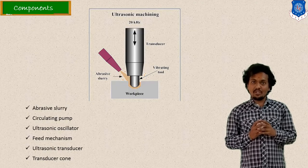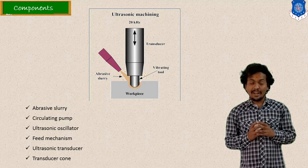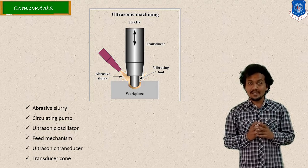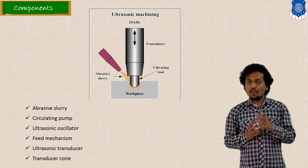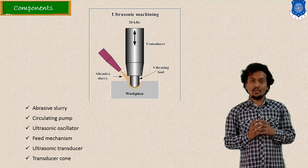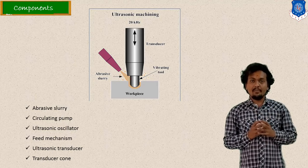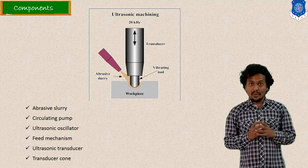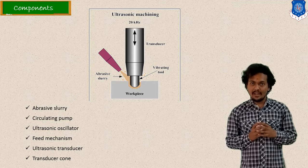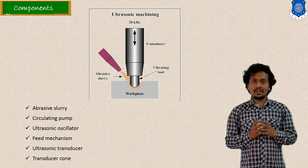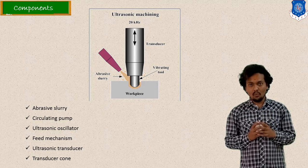So in ultrasonic machining, here I mentioned the basic setup or construction. So as per our discussion, here in ultrasonic machining, vibratory motion is important — it means a transducer is used. So due to the transducer, we can achieve this up-down or vibratory motion and due to this vibratory motion, we can remove the material. After that, abrasive slurry is also important and that is also mentioned here in this principle figure. The purpose of abrasive slurry is to remove the material at a faster rate or to increase the material removal rate.